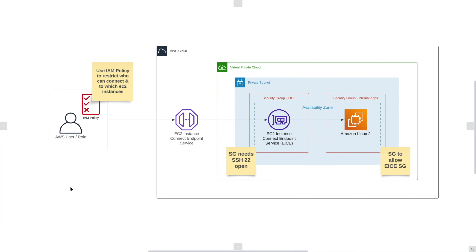In this video, we're going to take a look at just that. What we're doing here today is creating an AWS IAM role, attaching an IAM policy that grants the privileges or AWS actions needed to enable our AWS role to connect to the EC2 instance connect endpoint service, which will allow us to connect to an EC2 instance in a private subnet of our VPC.